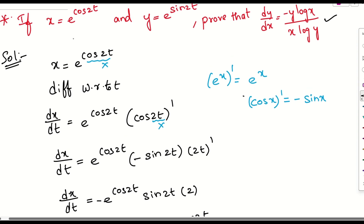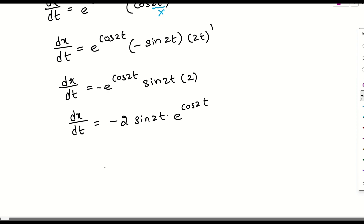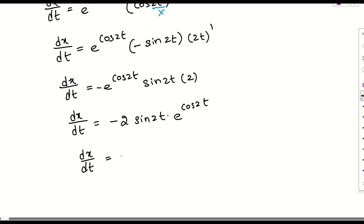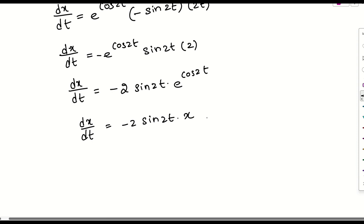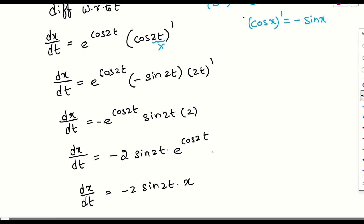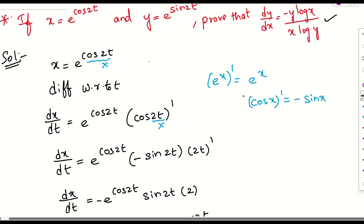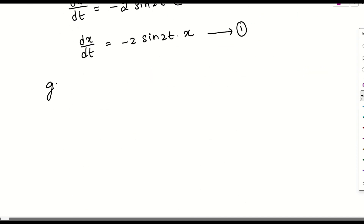Now e^(cos 2t) is nothing but x, as given. So substituting, dx/dt = -2 · sin 2t · x. Let us take this as equation number one.